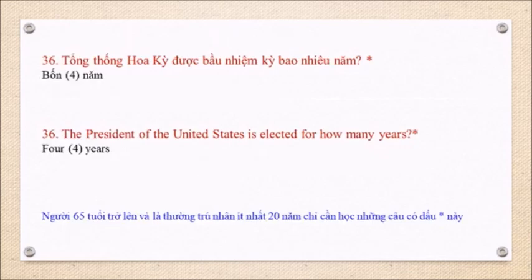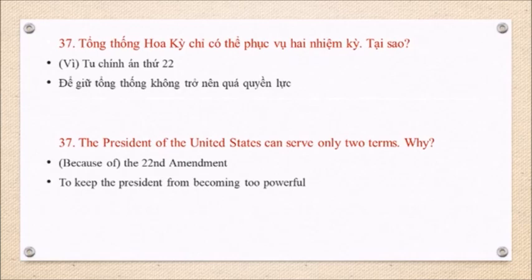Question 36: The President of the United States is elected for how many years? 4 years. Question 37: The President of the United States can serve only two terms. Why? Because of the 22nd Amendment. To keep the President from becoming too powerful.